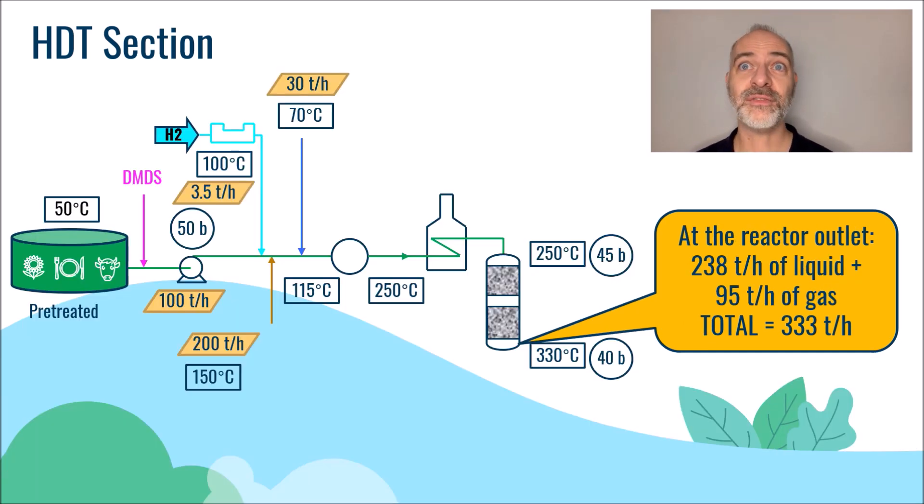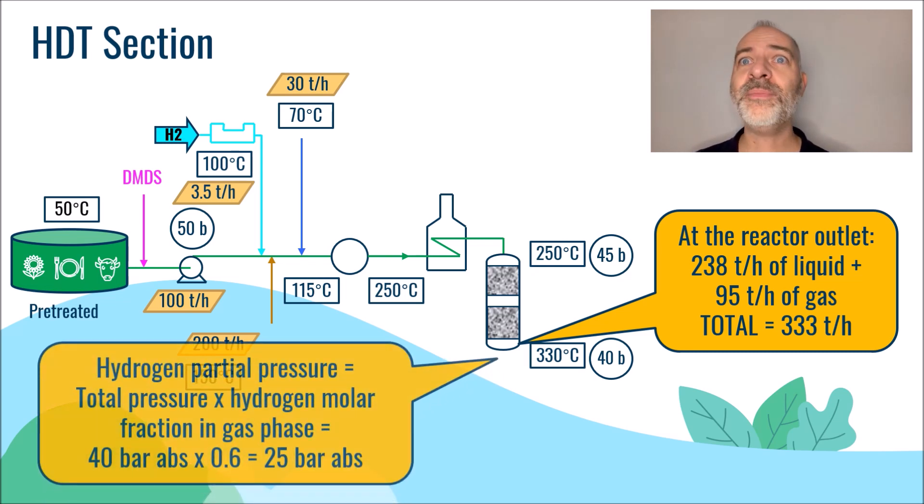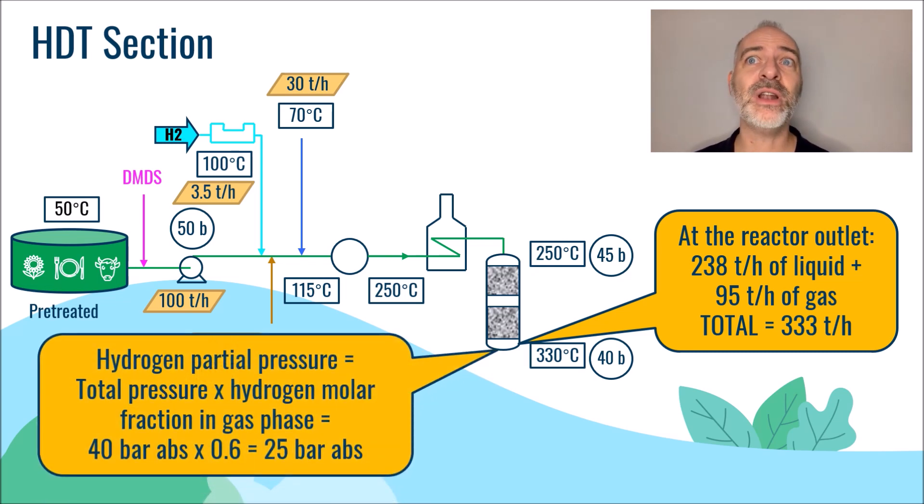At the outlet of the reactor, it is therefore possible to calculate the partial pressure of hydrogen. We obtain a value of 40 bars that multiplies the molar fraction of hydrogen in the gas phase, estimated here at 60 volume percent, which leads to a value of about 25 bars.